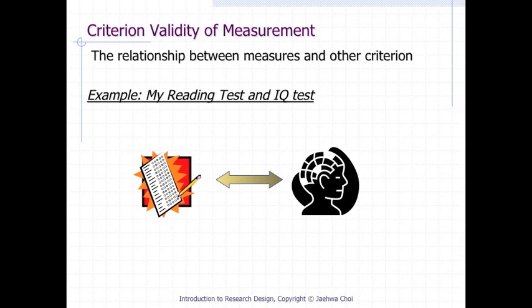Criterion validity of measurement concerns the relationship between measures and other criteria. For example, prior research has argued that reading test scores and IQ test scores are highly correlated. Given this, a new reading test can show criterion validity if the scores from your test are highly correlated with the IQ test score as the criterion.